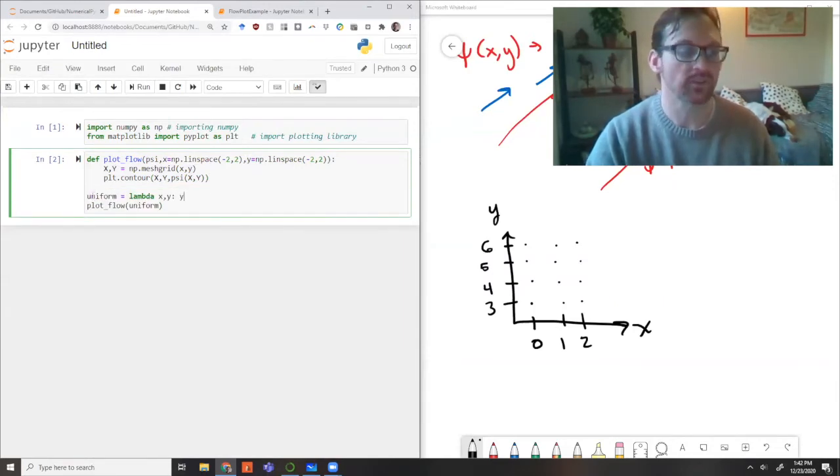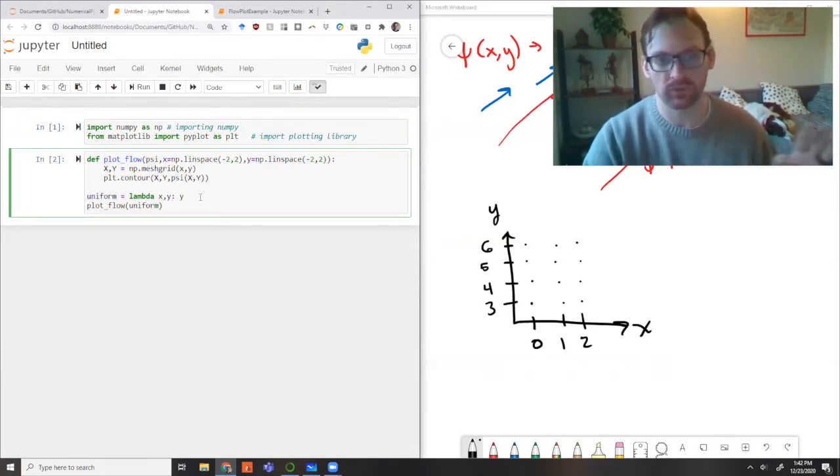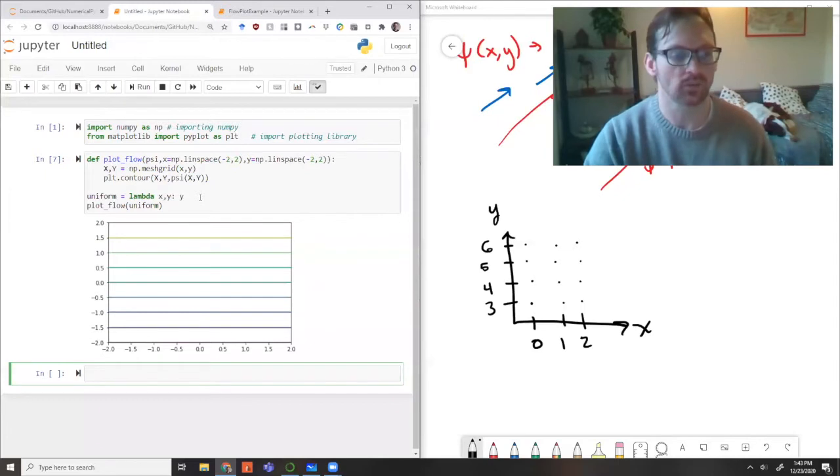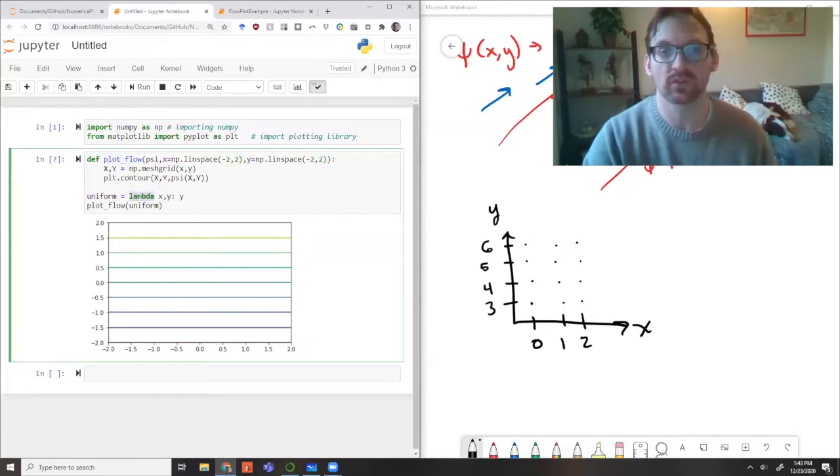To try it out, I have to define some stream function. Let's start with the really easy uniform flow. It's just flow from left to right, and we should get streamlines that are straight lines. That worked. Note I defined the uniform flow using lambda function syntax: define a function of x and y, the result is just y. This is our uniform flow.